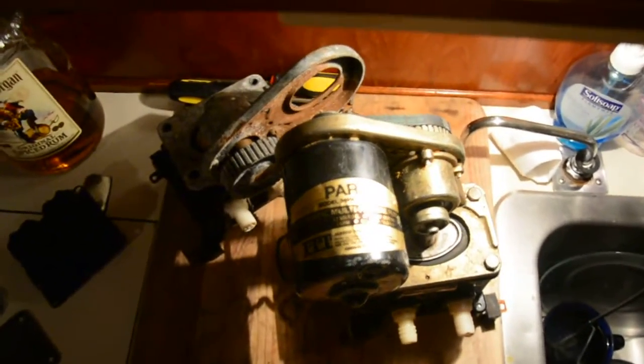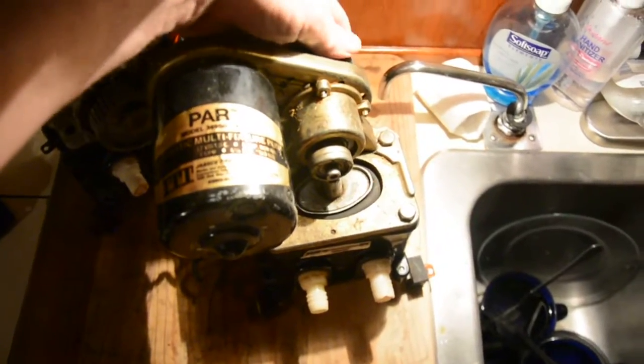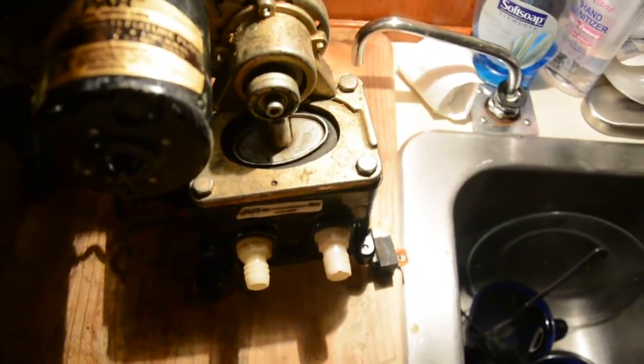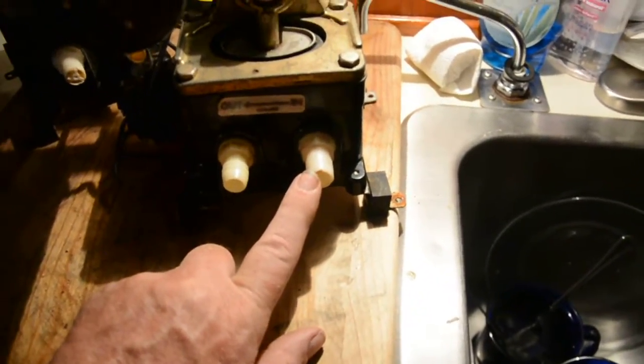This is a Japsco PAR 3 gallon per minute water pump. Pump motor turns here, the diaphragm comes up and down. Sucks water in the inlet, out the outlet.